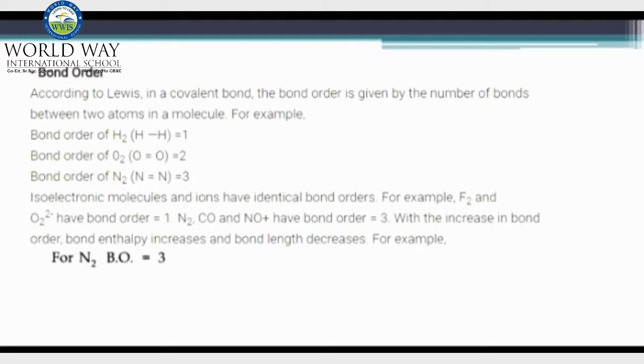Isoelectronic molecules and ions have equal or same bond orders. For example, fluorine and oxide have bond order one. Similarly, nitrogen, carbon monoxide, and nitronium ion have bond order equal to three.